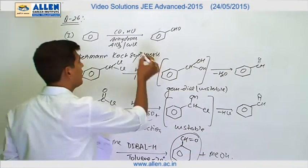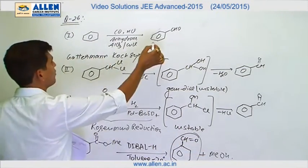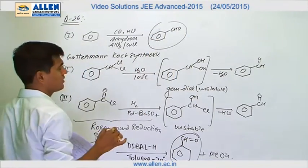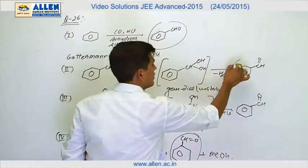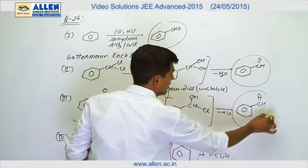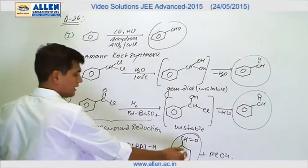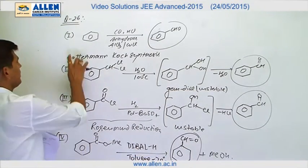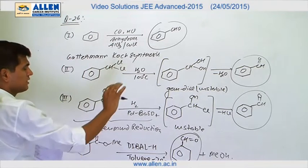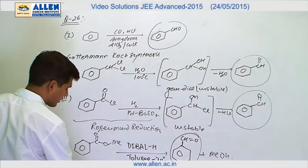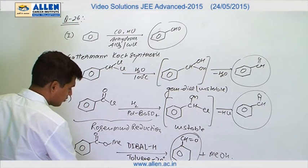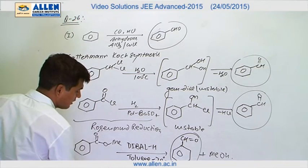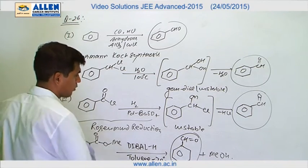So, observing all reactions: benzaldehyde is obtained as a product in the first, second, third, and fourth reactions. In each reaction, we obtained benzaldehyde as a product. So the answer for this question is 4.